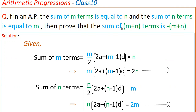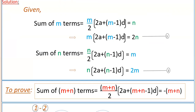So here we have to prove that sum of m plus n terms is minus of m plus n, using these two equations. The sum of m plus n terms equals m plus n by 2 into 2a plus m plus n minus 1 into d, and we need to show this equals minus of m plus n.